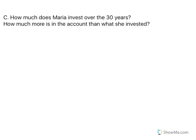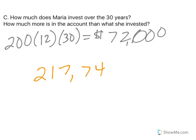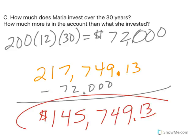How much does Maria actually invest over 30 years? She puts in $200 a month, 12 months a year for 30 years — so she actually invests $72,000. At the end of 30 years she has $217,749.13. If we subtract the $72,000 she put in, that means she has an extra $145,749.13 — all free money from the interest. And that is the end of your practice.